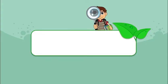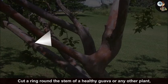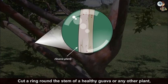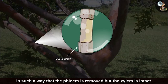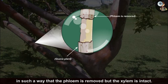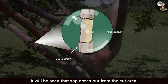5. To show that conduction of food occurs through the phloem, cut a ring round the stem of a healthy guava or any other plant in such a way that the phloem is removed but the xylem is intact. It will be seen that sap oozes out from the cut area.